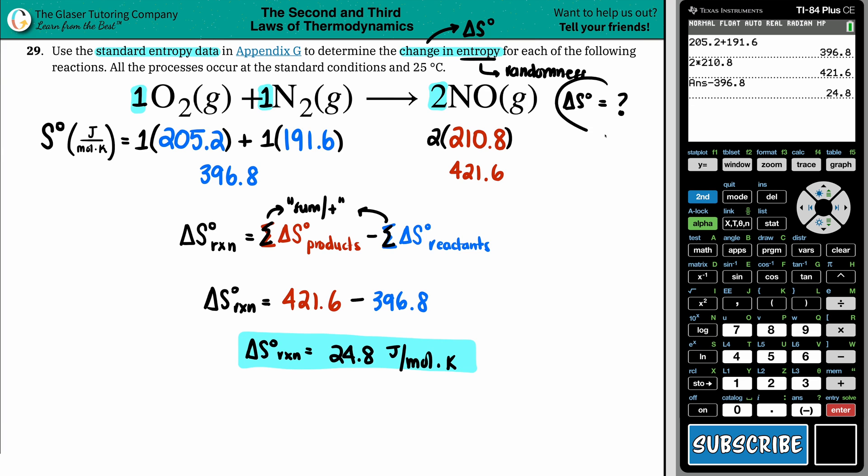And in this case, we are increasing in entropy because the value is positive. But remember, when we guesstimated, we couldn't guesstimate. But that's why it's so close to zero. It's only 24.8 values, numbers above zero. So in this case, it is becoming more random.